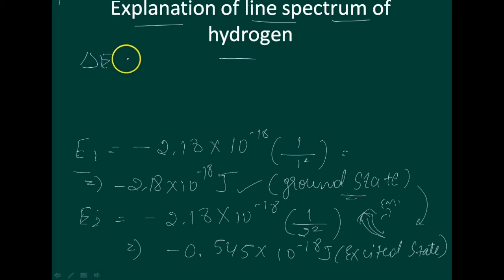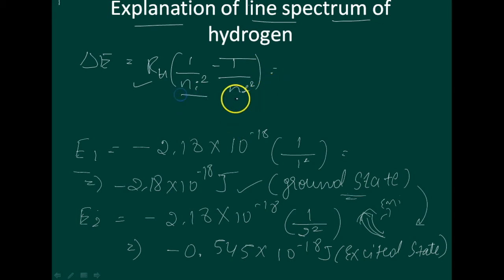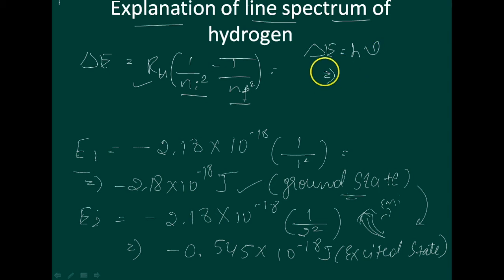Delta E is equal to RH into 1 by Ni squared minus 1 by Nf squared. Here RH is the Rydberg constant, 2.18 into 10 raised to minus 18. Ni is the initial energy level state and Nf is the final energy state. Delta E is also equal to h times v.